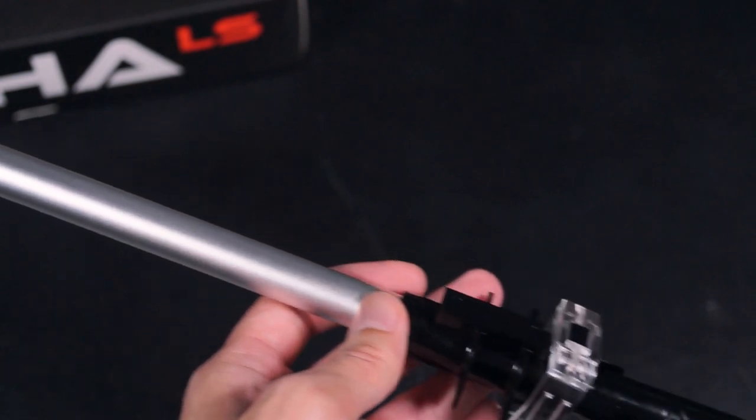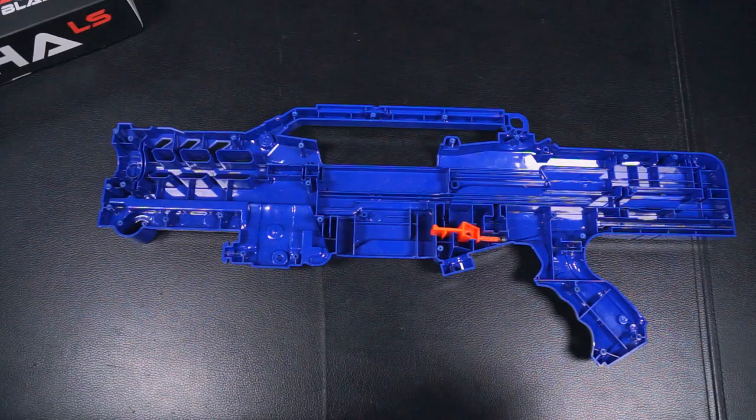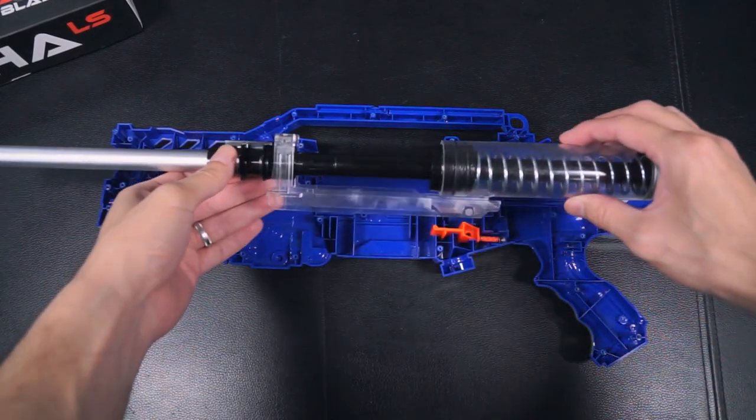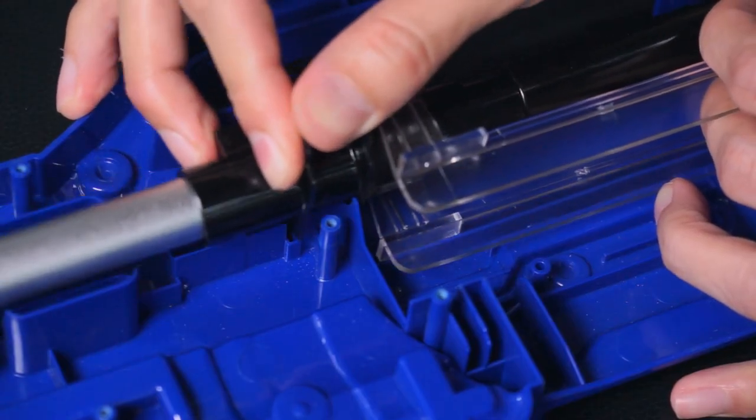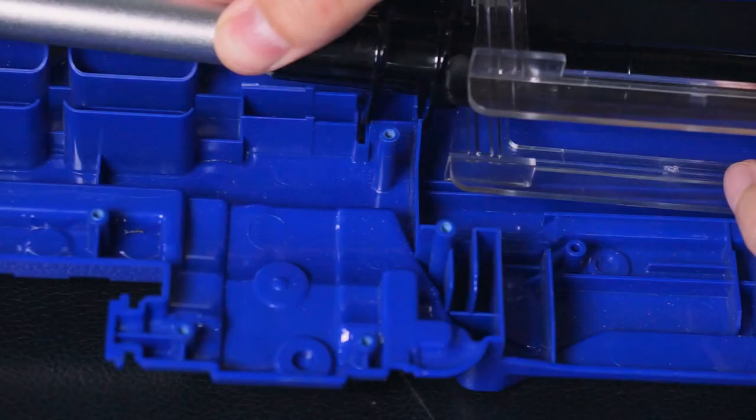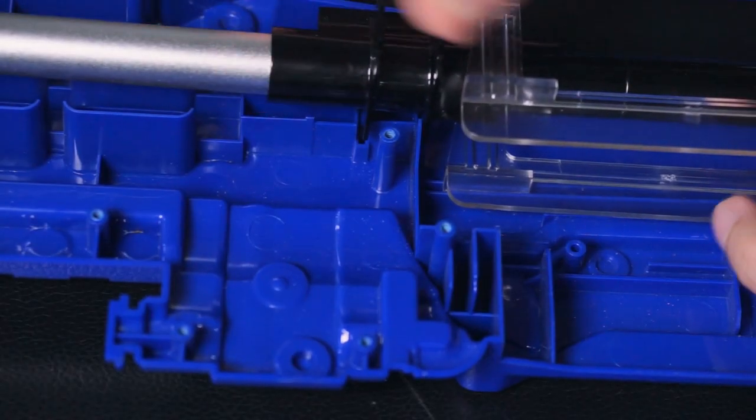Make sure your Alfa LS kit internals are aligned properly before installing into the blaster shell. Align your main internals and place it into the shell. Make sure the duct gate sits into the slots of the shell. Also make sure that the bolt slat sits into the sliding slots of the shell.